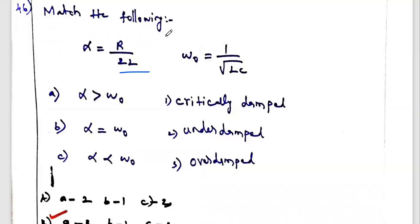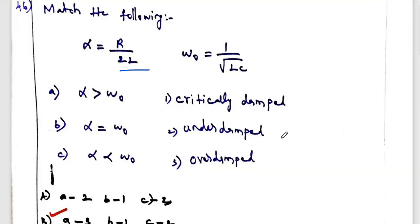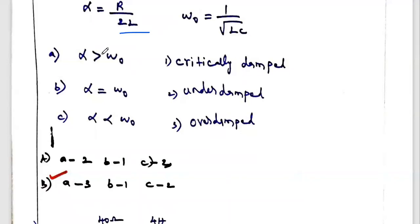The first question: match the following. Alpha equals R divided by 2L, and omega-naught equals 1 divided by square root of LC. This is the resonance frequency and the damping ratio is given. Depending upon the alpha value and omega-naught, three options are given: alpha greater than omega-naught, alpha equal to omega-naught, and alpha less than omega-naught — corresponding to critically damped, underdamped, and overdamped.